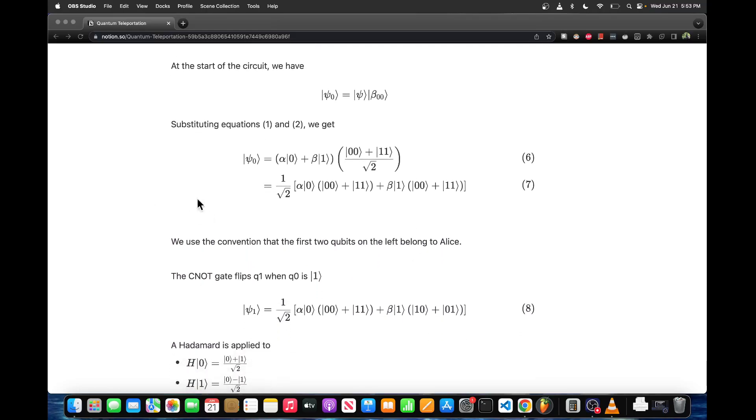If we expand out these terms in bracket notation, we get this is the original psi state and this is the Bell state 00. We could just multiply out the terms keeping in mind that the first two qubits belong to Alice, so this is Alice's qubit, this is Alice's qubit, this is Bob's qubit, and so on. Bob's qubit is all the way on the right.